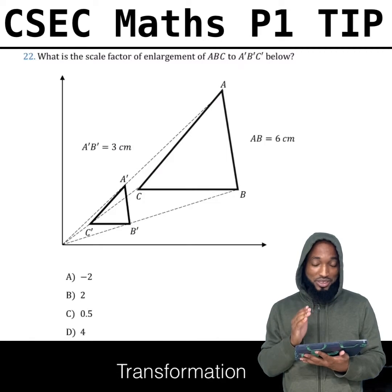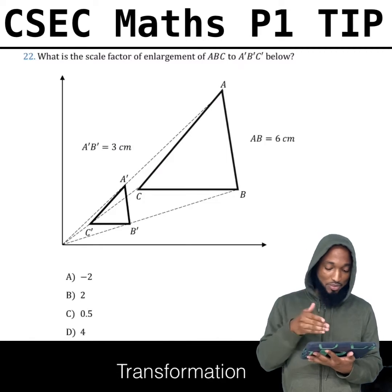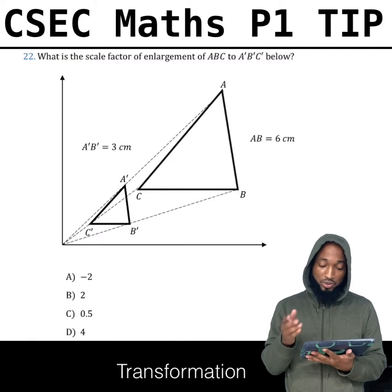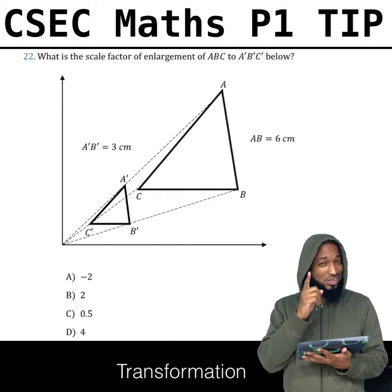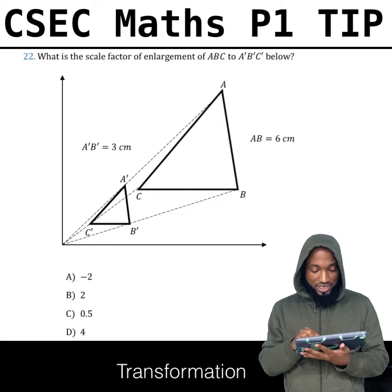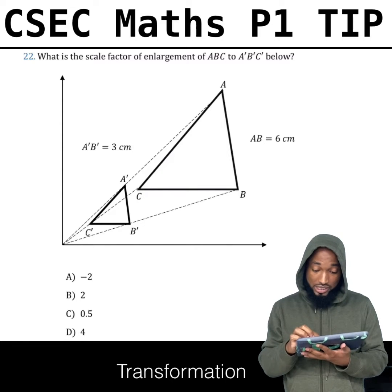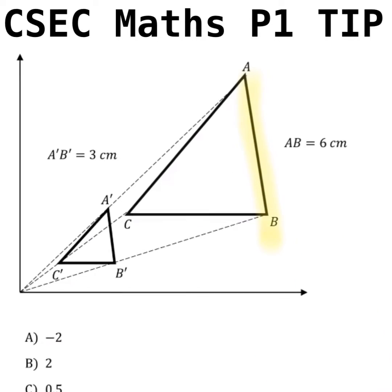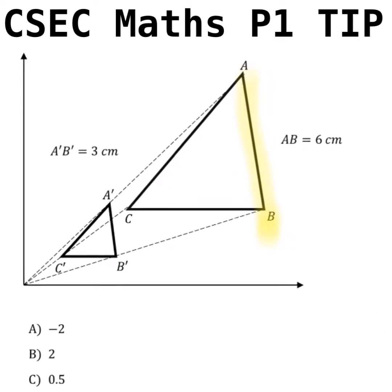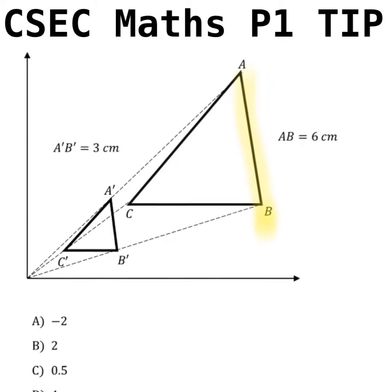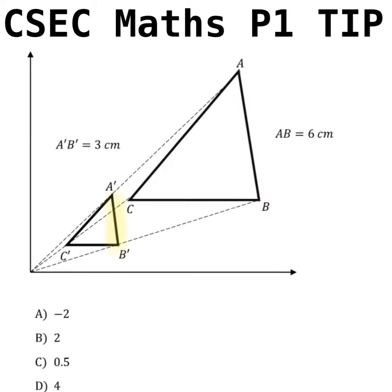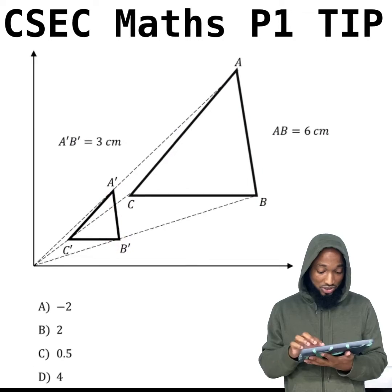This is the scale factor of enlargement of ABC to A'B'C'. There's a common mistake that happens in this question. Note, this is AB — this is the object, and this is the image.